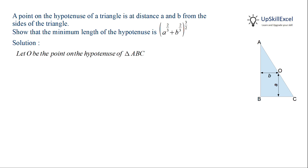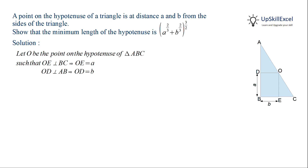Let O be the point on the hypotenuse of triangle ABC. OE, which is perpendicular to BC, will be equal to A, and OD, which is perpendicular to AB, will be equal to B. Let angle C be equal to theta. Therefore, angle AOD is also equal to theta, as the two triangles AOD and OCE are similar.